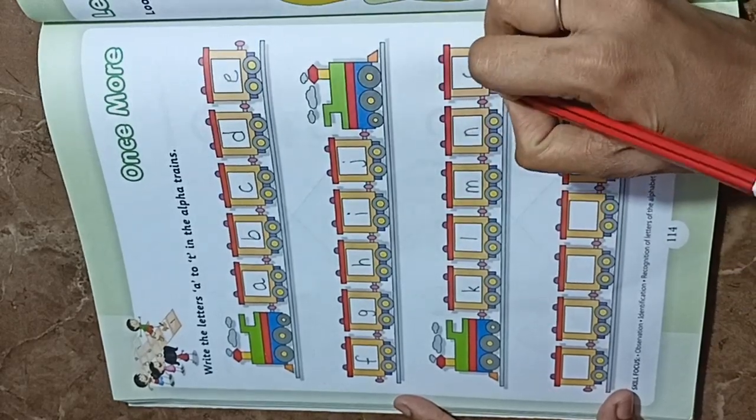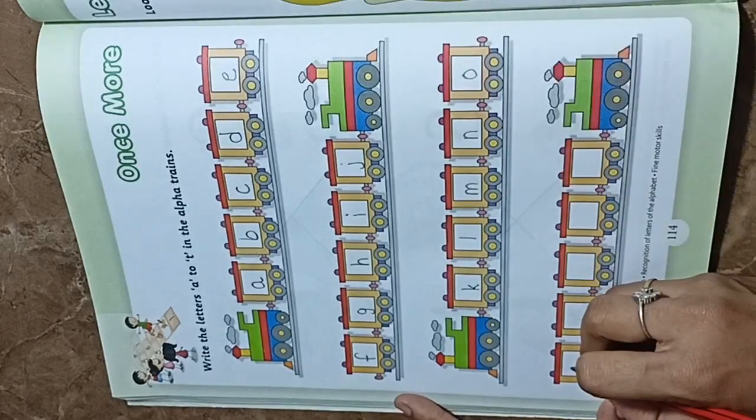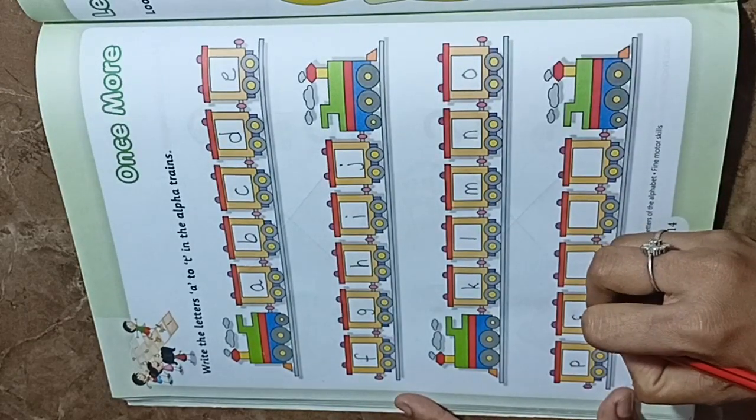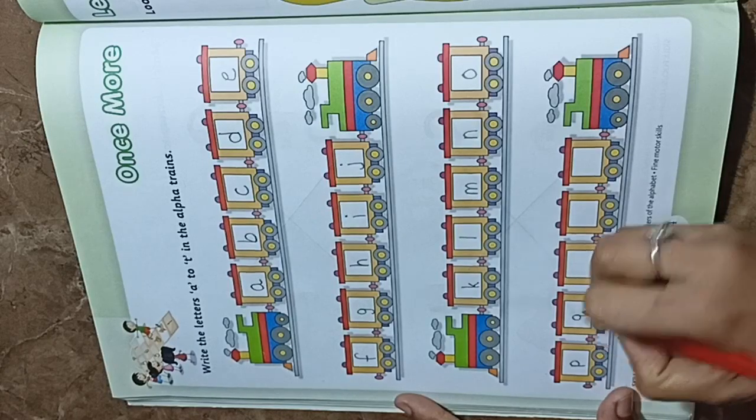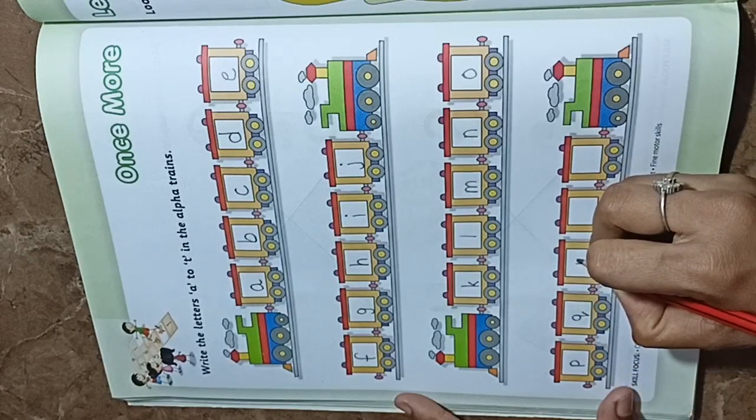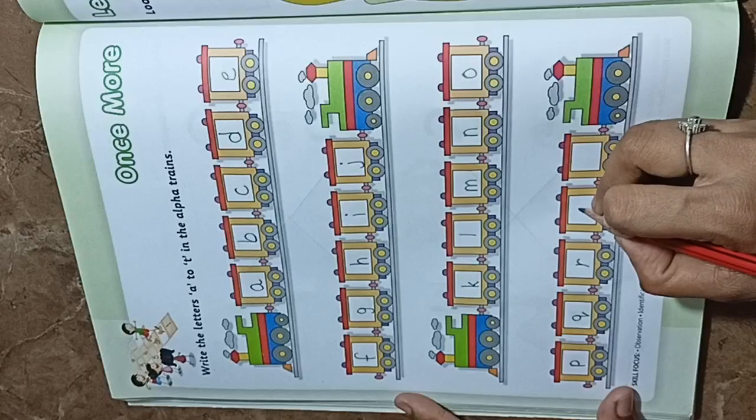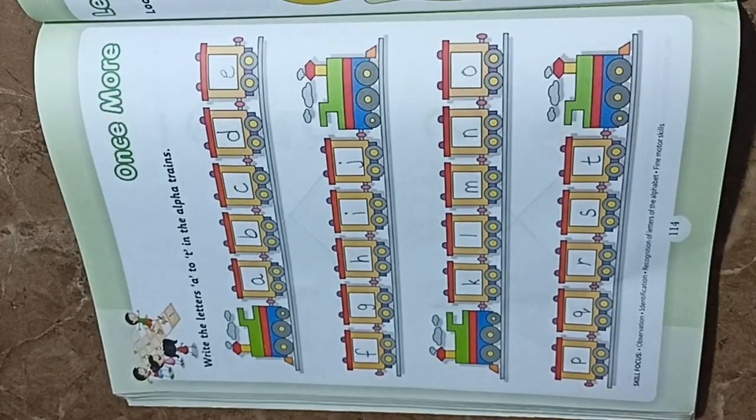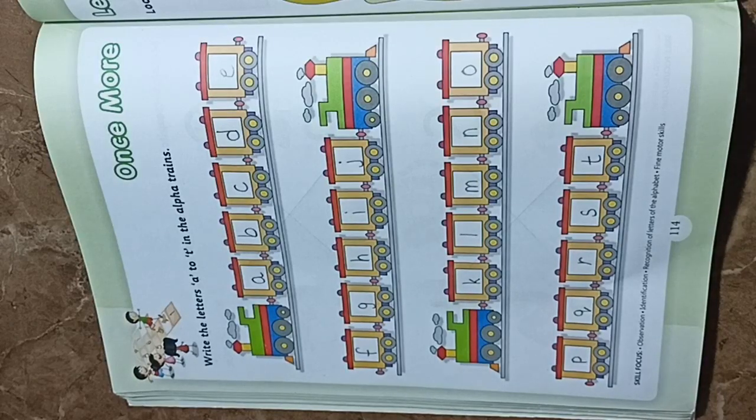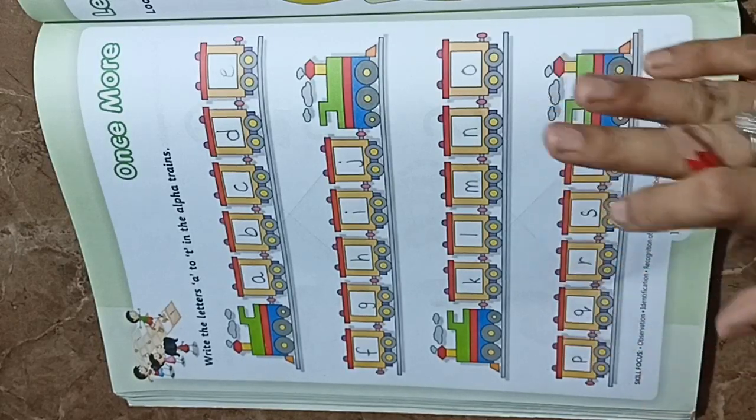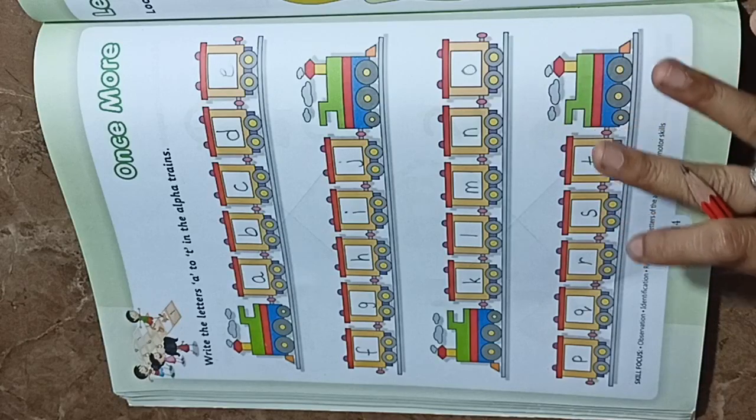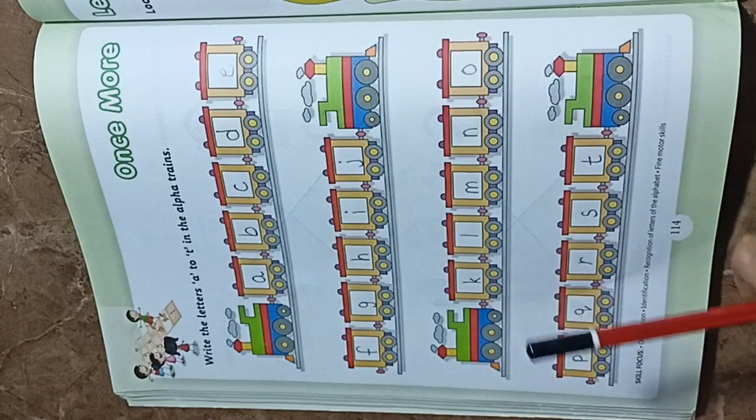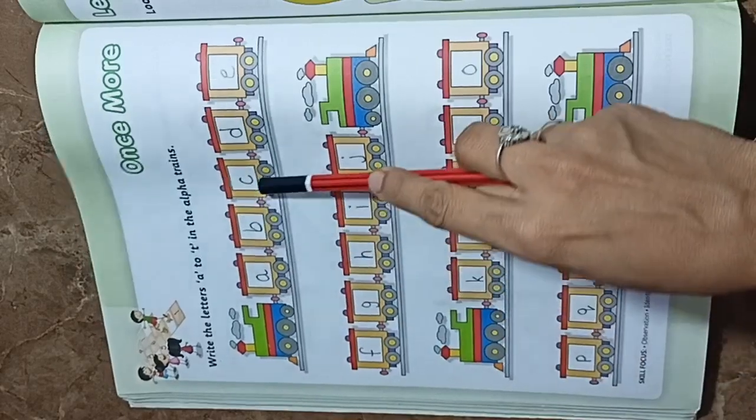So students, like this way you have to write A to T in small letters. Okay, so let's once recite A to T. A, B, C, D, E, F, G, H, I, J, K, L, M, N, O, P, Q, R, S, T.